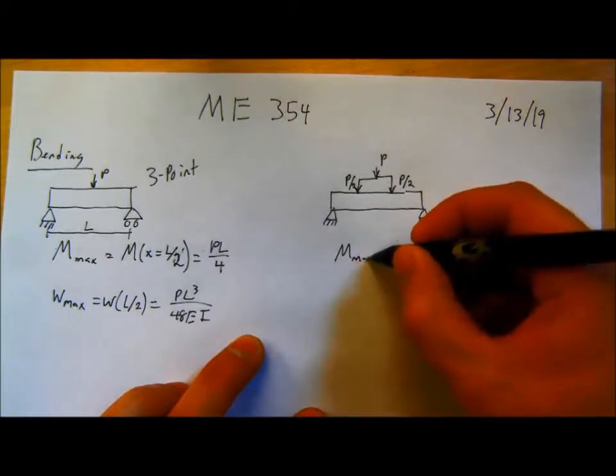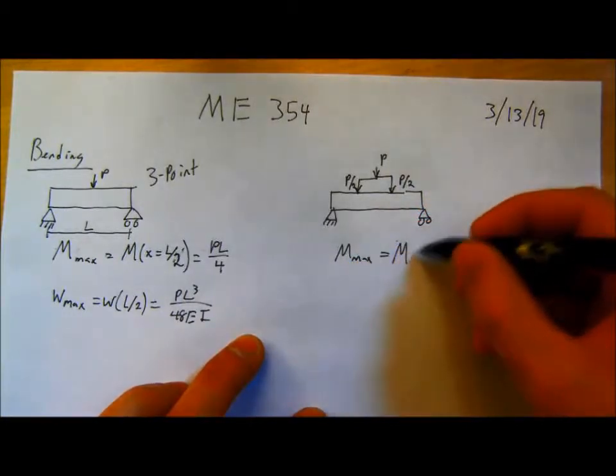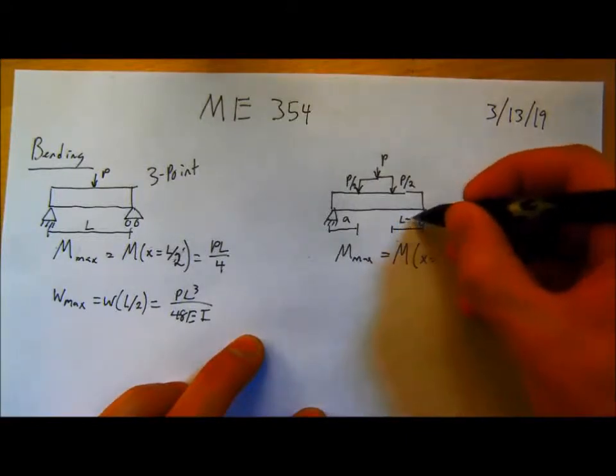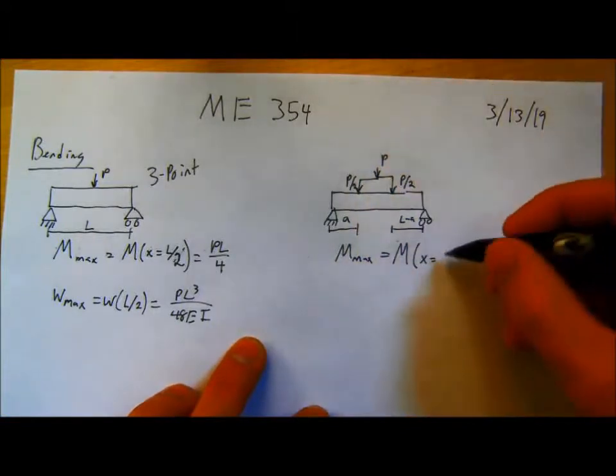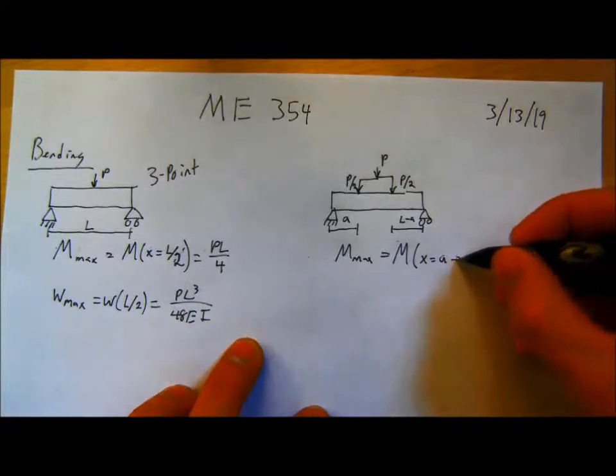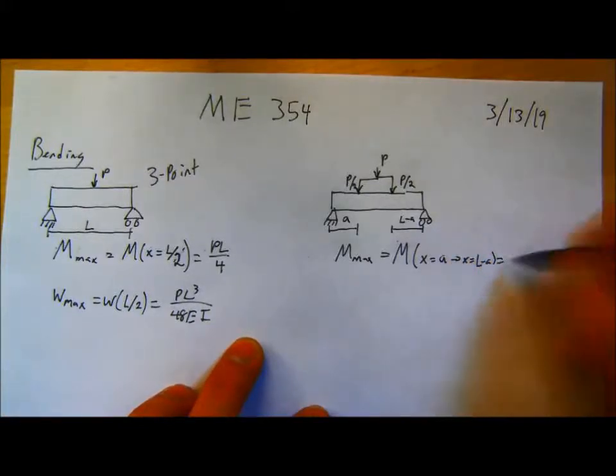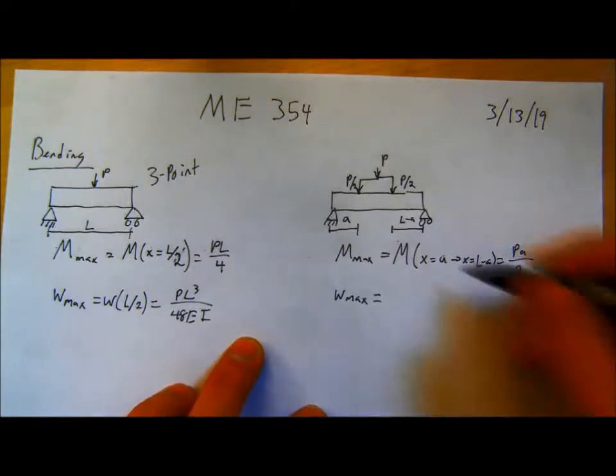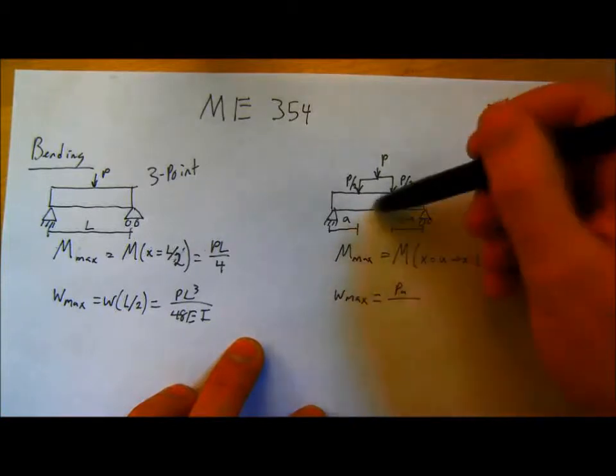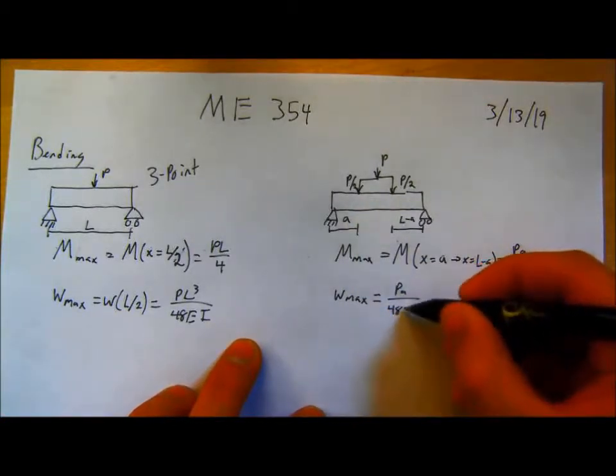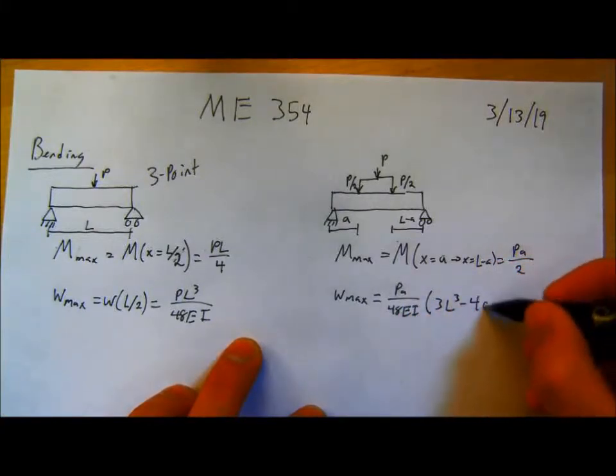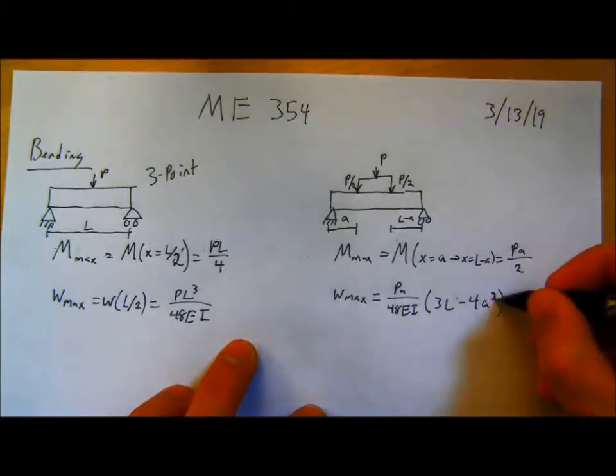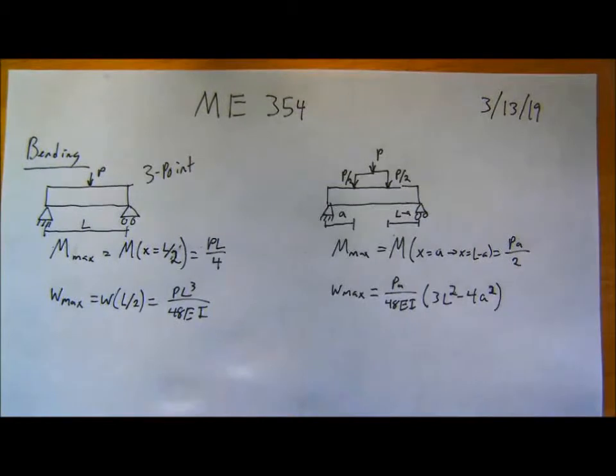The maximum moment is constant from anywhere between x equals A to x is L minus A, where the beam is length L. The moment is constant through the midsection, anywhere between x equals A to x is L minus A. And it's P A over 2. The W max is also in the center of the beam, and it's P A over 48 E I times 3 L squared minus 4 A squared.